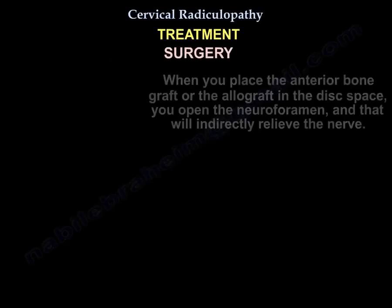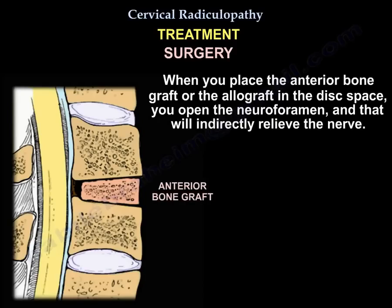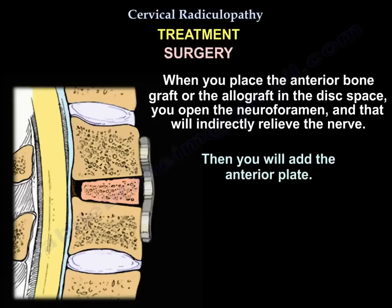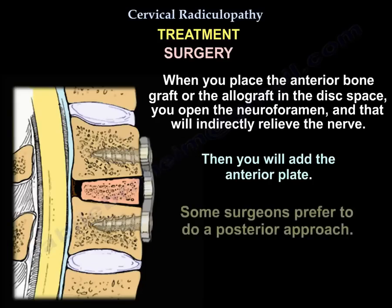The procedure to treat cervical radiculopathy is usually done anteriorly with direct removal of the lesion causing the radiculopathy, such as a herniated disc or spurs. When you place the anterior bone graft or allograft in the disc space, you open the neuroforamen and indirectly relieve the nerve. An anterior plate is then added. Some surgeons prefer a posterior approach.